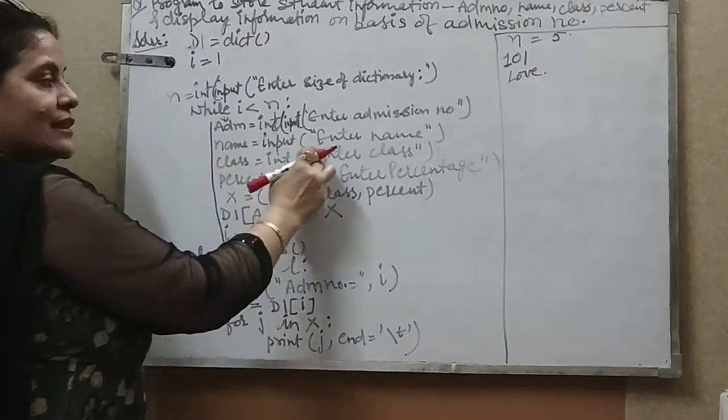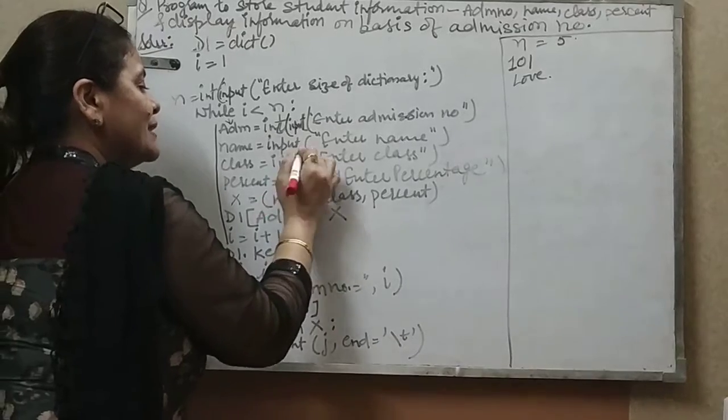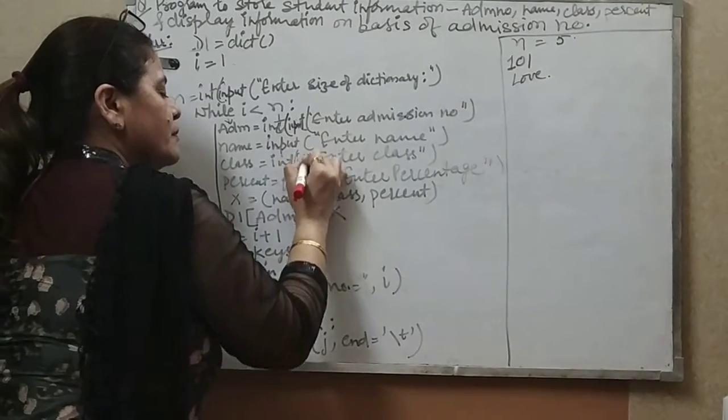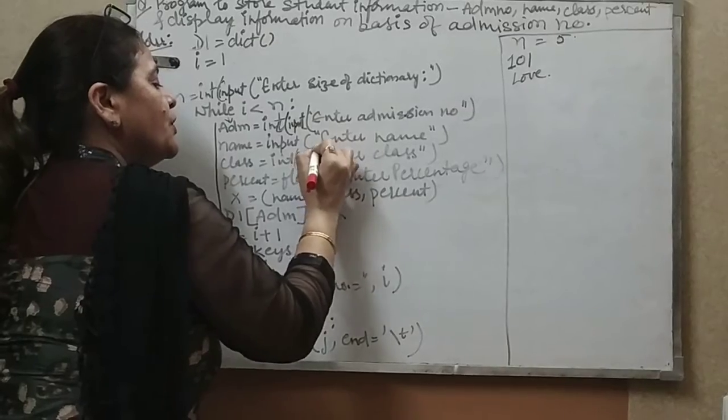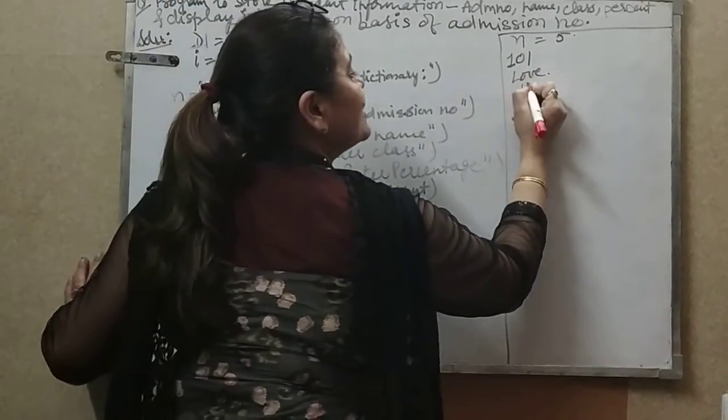Now class equals enter int input. Within brackets I have to mention input, enter class. I have to enter the class, suppose the class is 11.